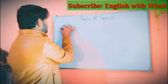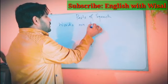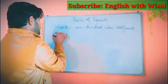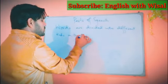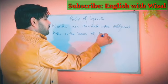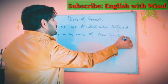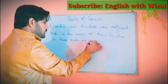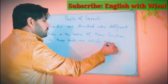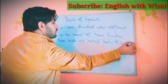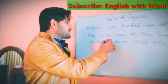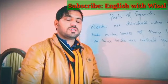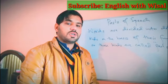Words are divided into different kinds on the basis of their function. Those kinds are called parts of speech. This means that all of the words of English are divided into different kinds, and we call them parts of speech.